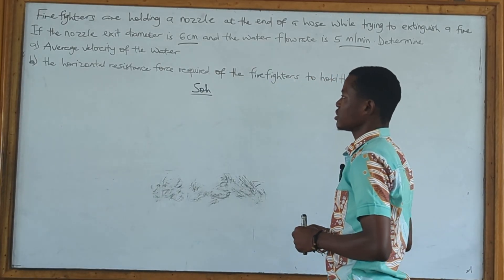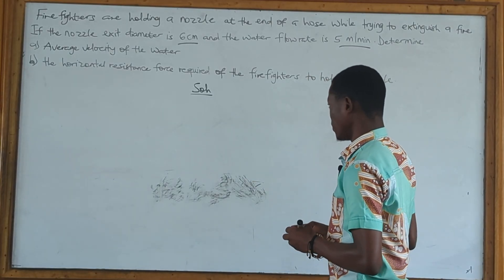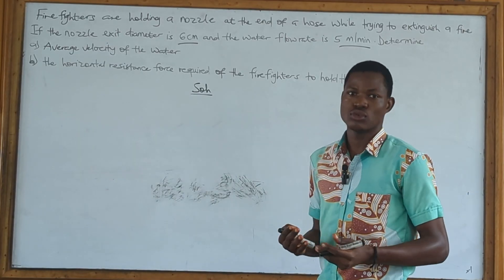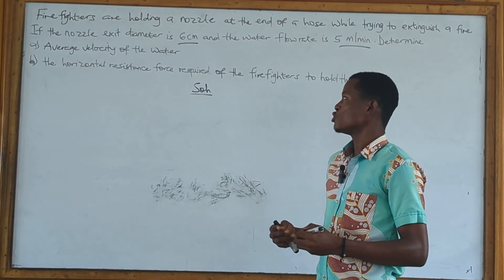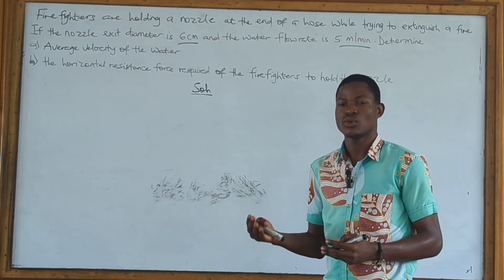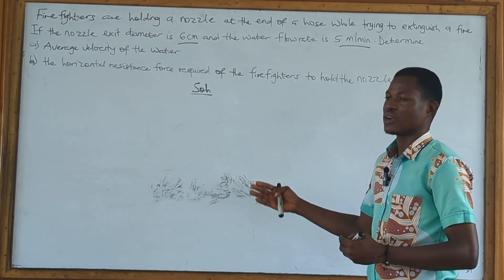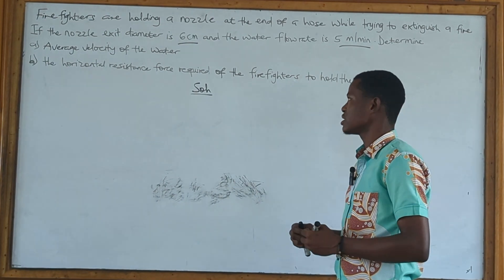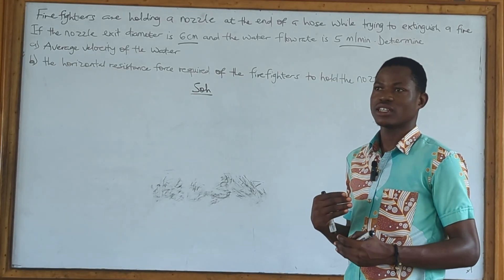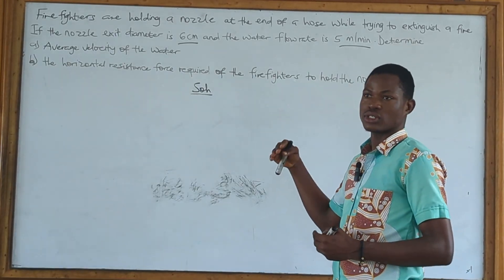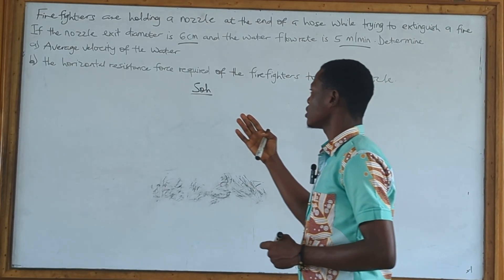The first part of the question asks us to determine the average velocity of the water. We need to know our conditions in order to choose the right equation. Since it's water, we know it's incompressible. We also assume it's in a steady state, meaning the time variation is constant. We also note that friction is zero or net zero.